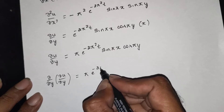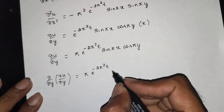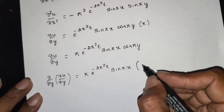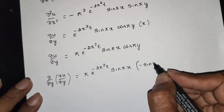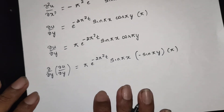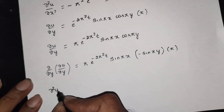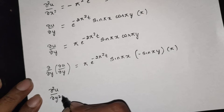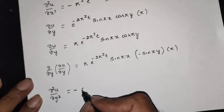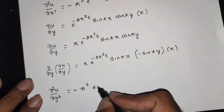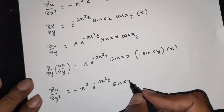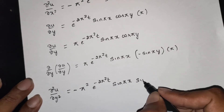Now differentiating again with respect to y. pi and e power minus 2pi squared t and sin(pi x) are constant. cos(pi y) differentiates to minus sin(pi y) into pi. Therefore dou squared u by dou y squared is equal to minus pi squared e power minus 2pi squared t sin(pi x) sin(pi y).